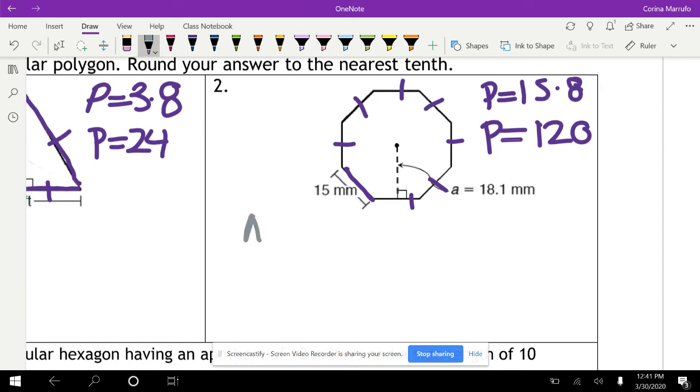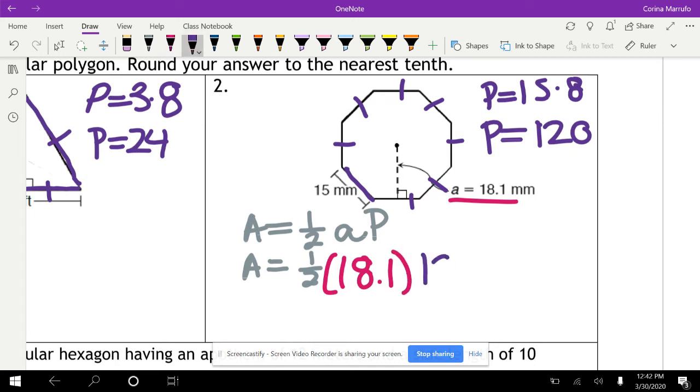So now we're ready to plug into the formula. Our formula is area equals one half little a, which is our apothem, times capital P, which is our perimeter. So area equals one half, and we're going to plug in. Little a stands for the apothem. The apothem is 18.1, and our perimeter is 120. So one half of 18.1 times 120, and that gives us 1086. So area equals 1086, and our units are millimeters squared.